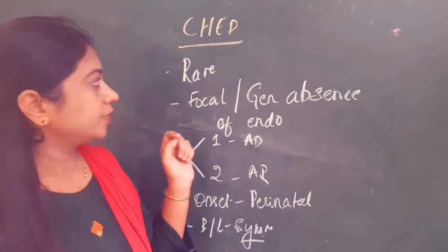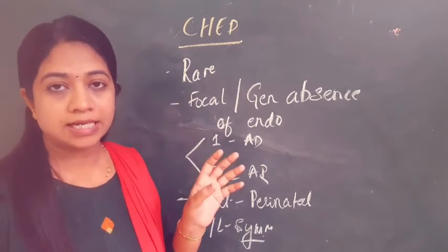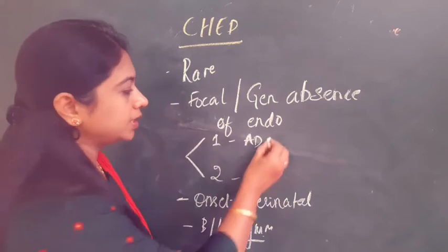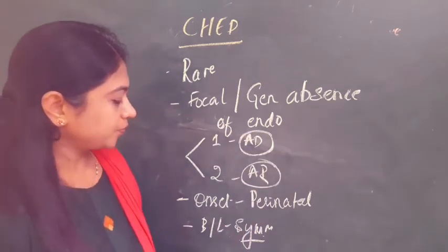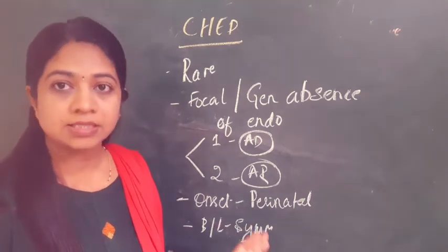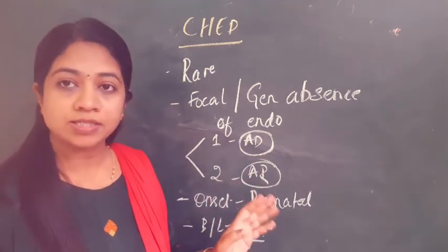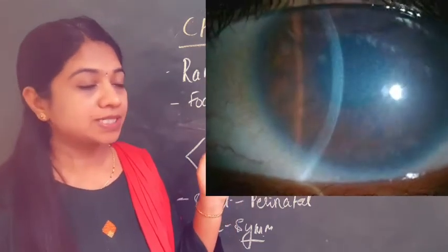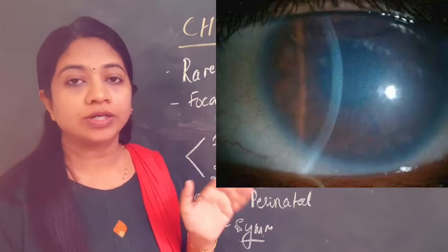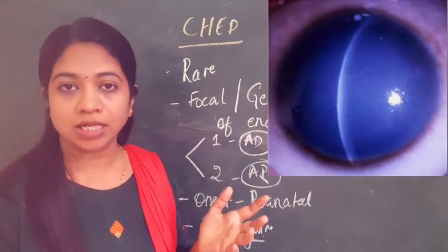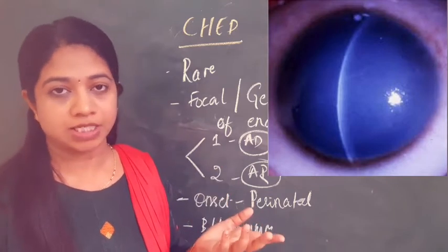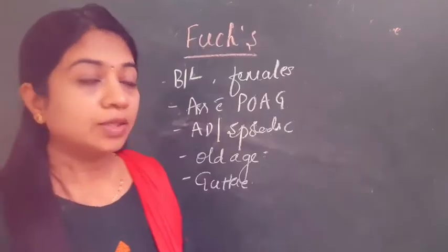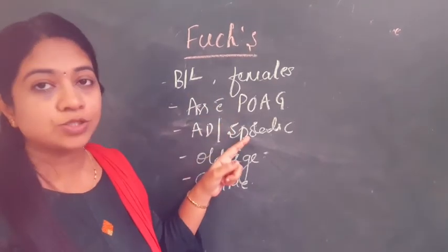Congenital hereditary endothelial dystrophy (CHED) is a rare disease due to focal or generalized absence of endothelial cells. It has two types: CHED 1 with autosomal dominant inheritance and CHED 2 with autosomal recessive inheritance. The onset is perinatal, and it is a bilateral, symmetrical disease. Children present with diffuse corneal edema, with the cornea appearing bluish to greyish, progressing to a ground-glass appearance and then to complete opacification, with variable visual acuity defect.